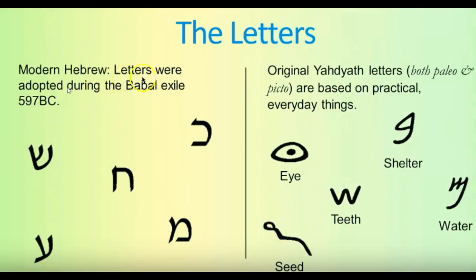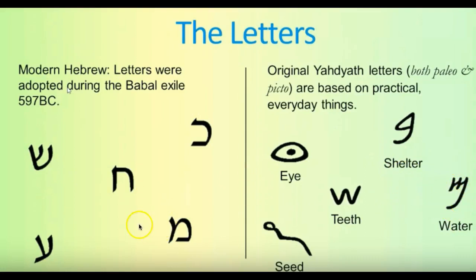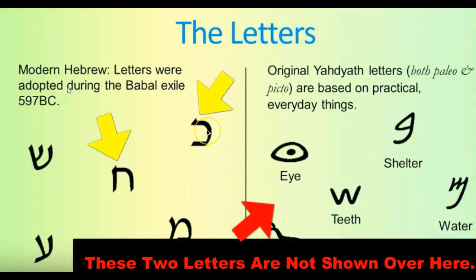When it comes to the modern Hebrew, the letters were adopted during the Babylonian exile around 597 before our Mashiach. As you can see, they bear almost little to no resemblance. The Shin in modern Hebrew bears some resemblance to the original letter, but not a whole lot. The Ayin in modern versus the original — little to no resemblance. Same with the Mem, which means water, and the Nun. The Kap, which means open hand or palm, and the Kat, which means wall or separation — all very different.